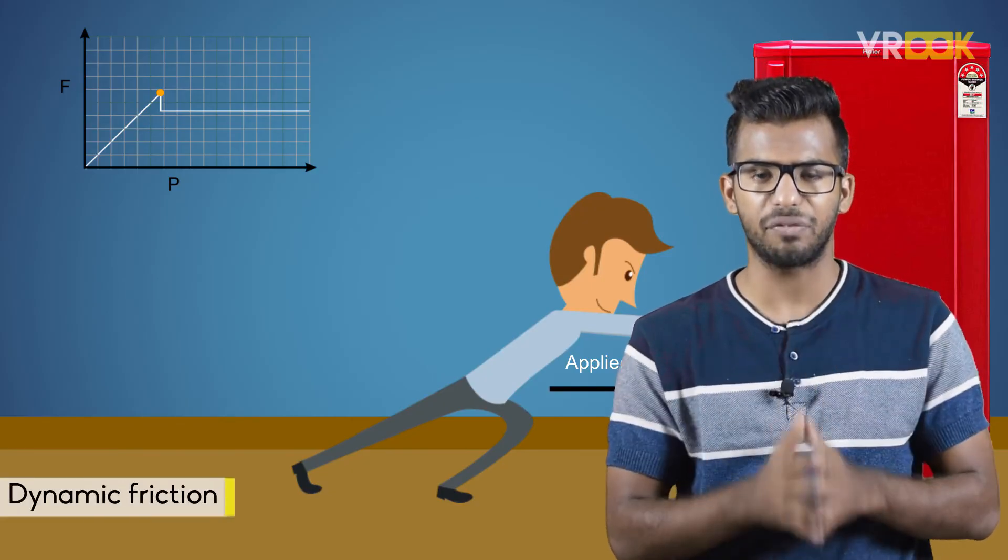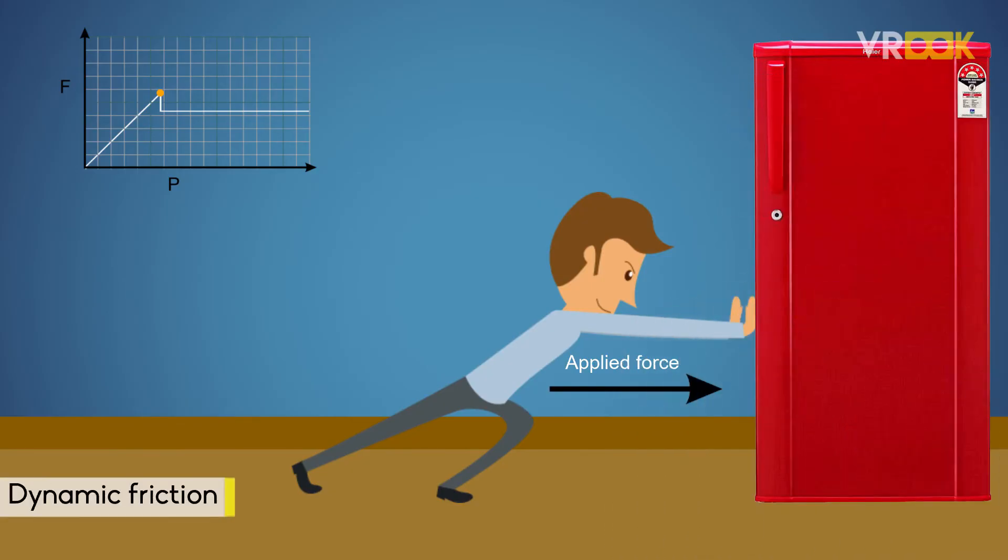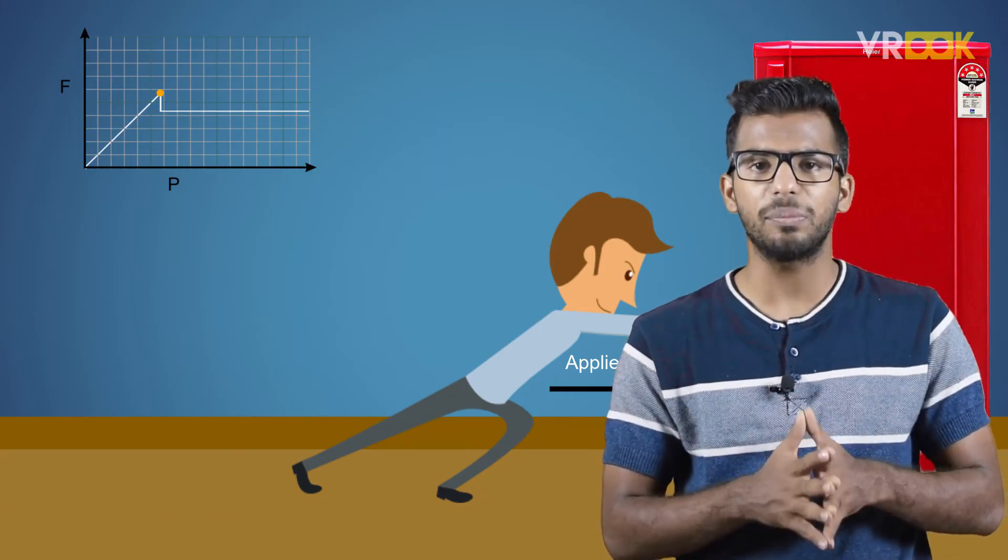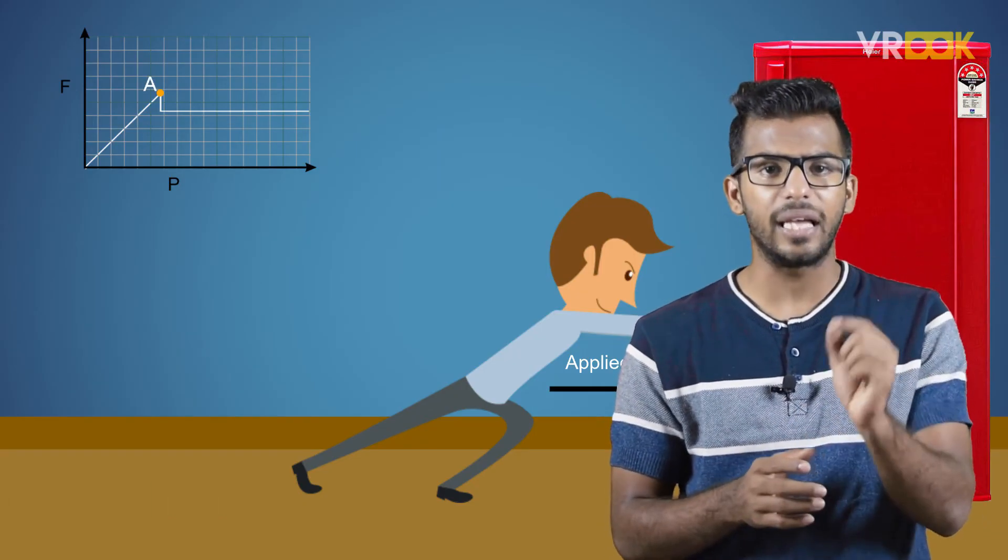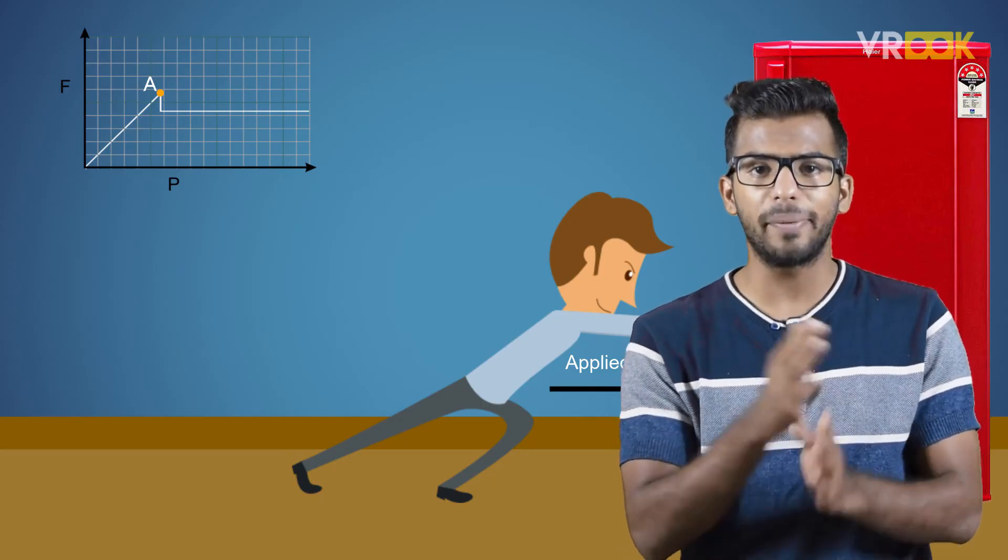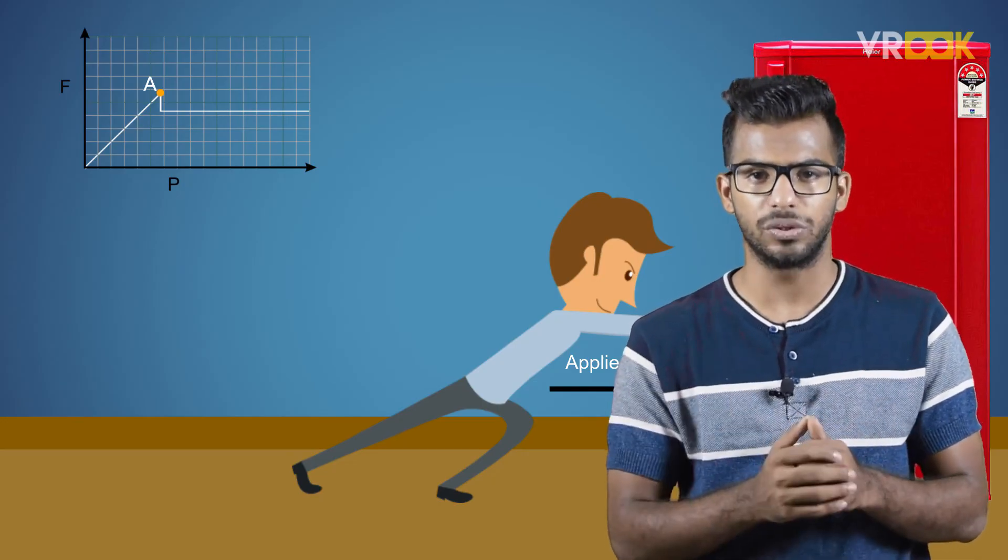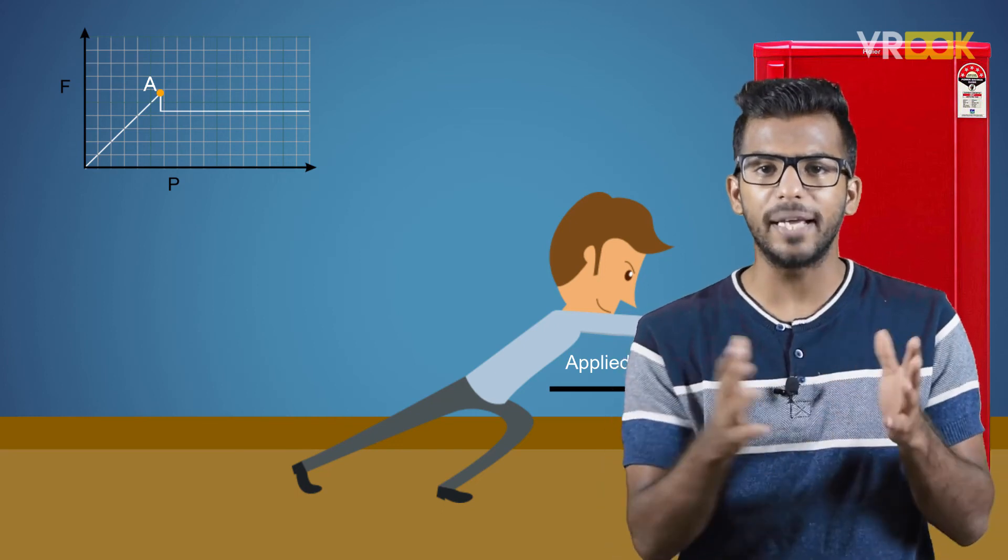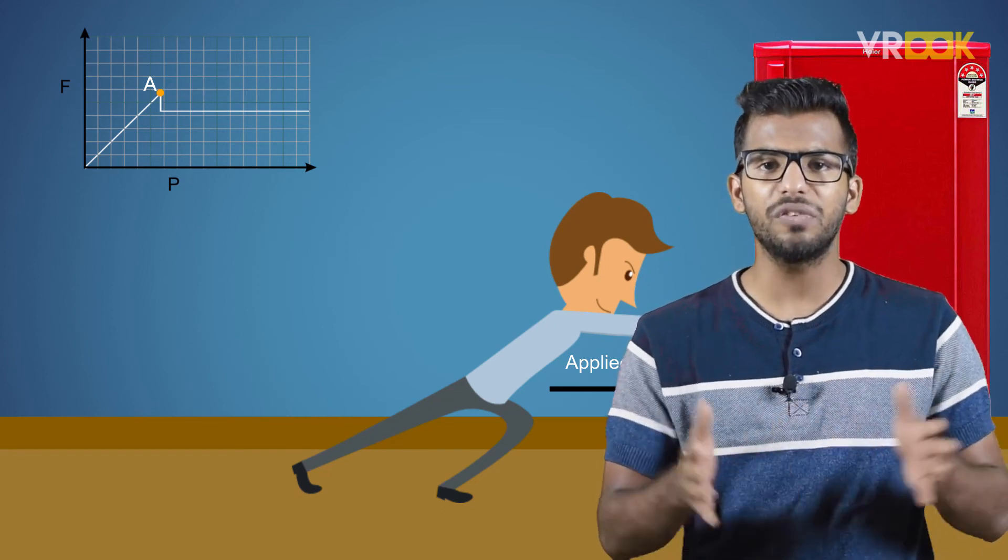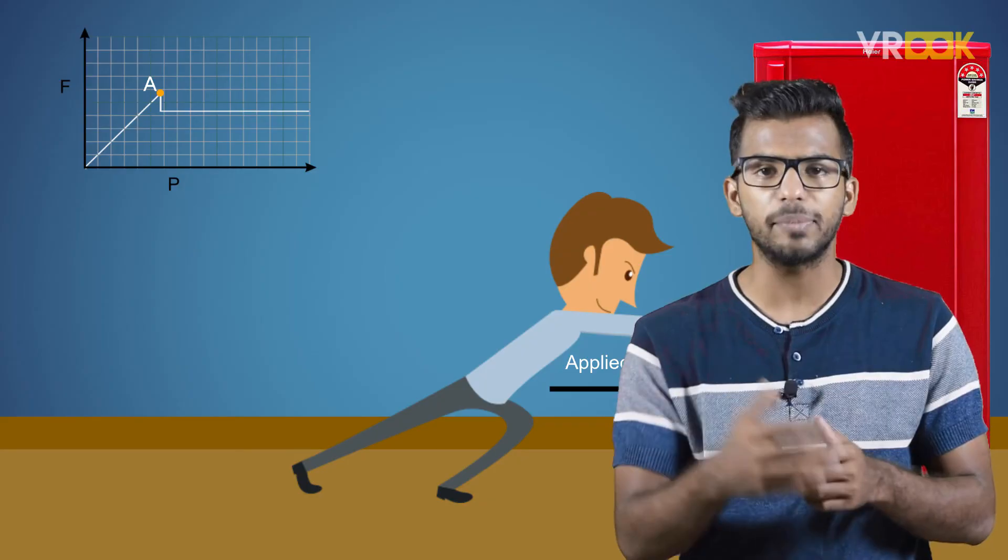Friction will be changing according to your applied force—it is changing dynamically, hence the name dynamic friction. As we can see from the graph, till point A the frictional force will be proportional to the applied force. After the point of impending motion, it will go in the region of dynamic friction, or sometimes called kinetic friction.